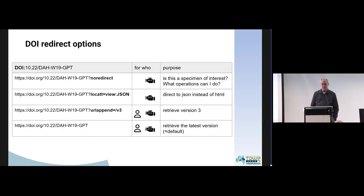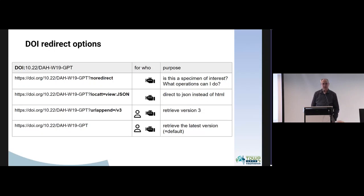We will always have these two redirects — HTML and JSON — included in the DOI. We can also retrieve a specific version: by default the DOI links to the latest version of the specimen, but because the digital specimen is a mutable object that changes over time with new annotations and additions of data, you may want to include a specific version in your reference. You can do that by appending the version number to the DOI. We keep only one identifier for all versions of the object.